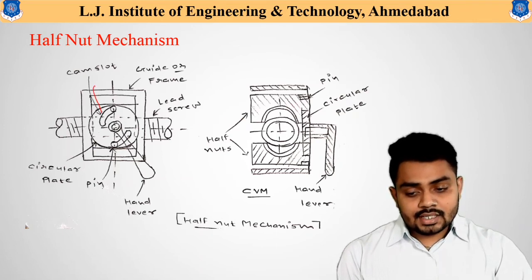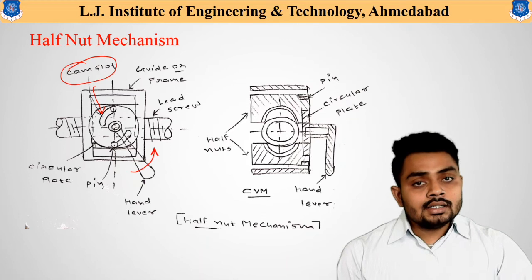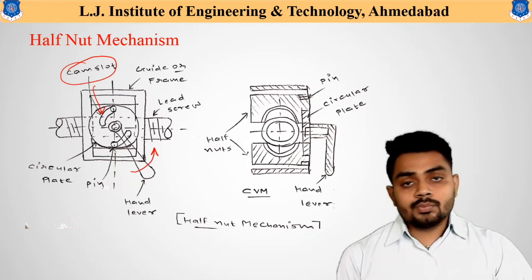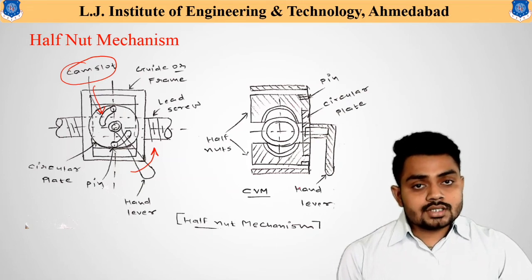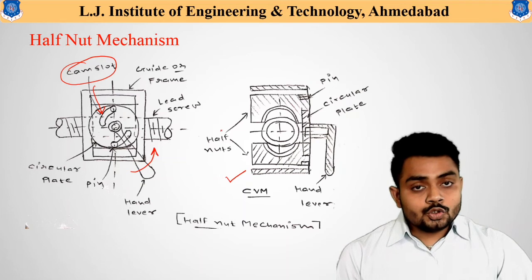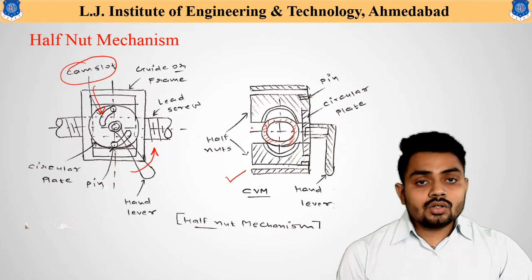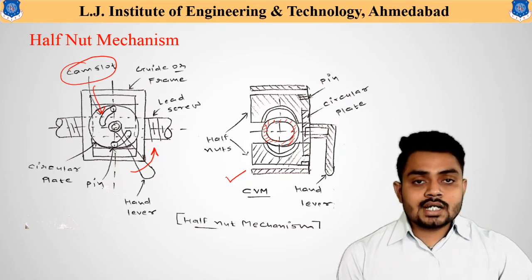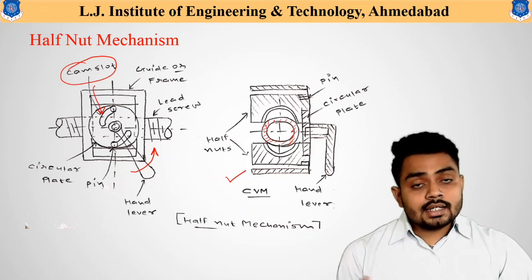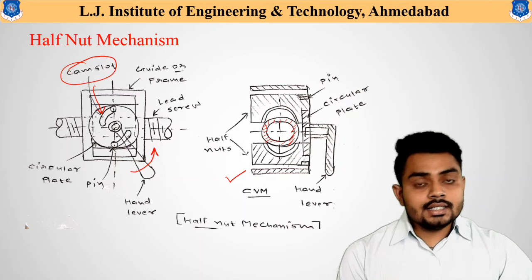When one wants to perform a thread cutting operation, the half nut mechanism is operated to engage the carriage to the lead screw. A cam slot arrangement is used so that when the hand lever is operated, engagement and disengagement is obtained. In the cross-sectional view of the half nut mechanism, two cups are visible separated at a specific distance, with the lead screw cross-section between them.